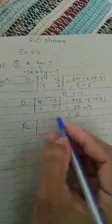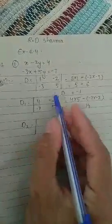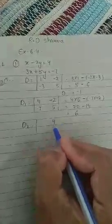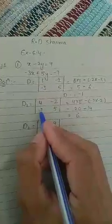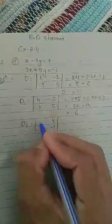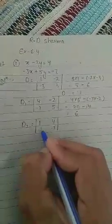So now we will find D2, that is in place of y's coefficient we will put the constant coefficients. x coefficient will remain the same. So that is 1, minus 3.